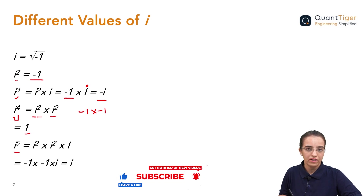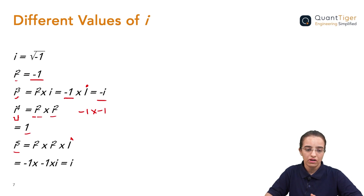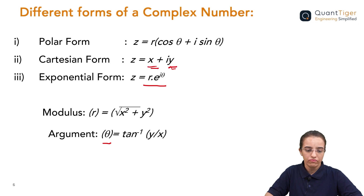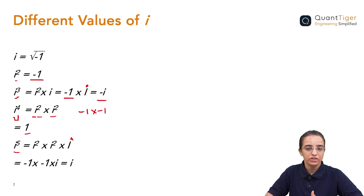For i⁵, we multiply i² twice and then once more by i: (−1)(−1)·i = +i. These are the different values of i which we will be using throughout our exercises, so these are quite important. I hope you understood the basics of complex numbers — what they are, how we use them in real life, the different ways we can represent them, and the values of i. Thank you.